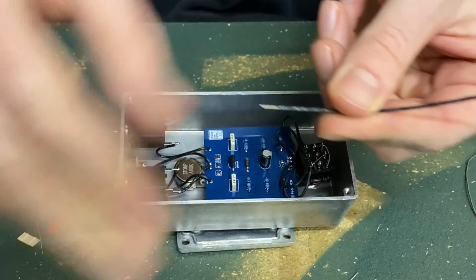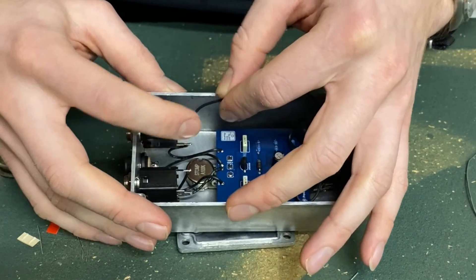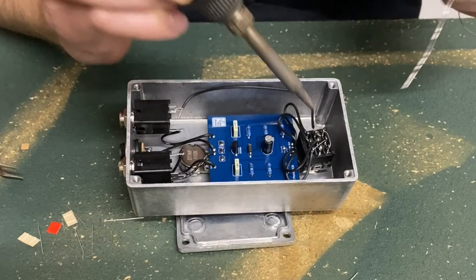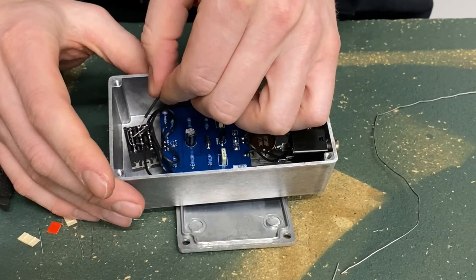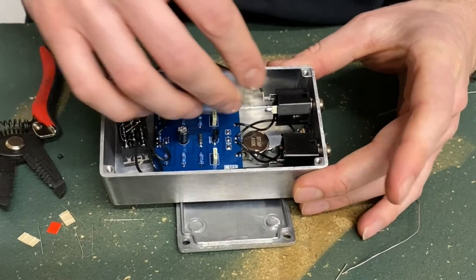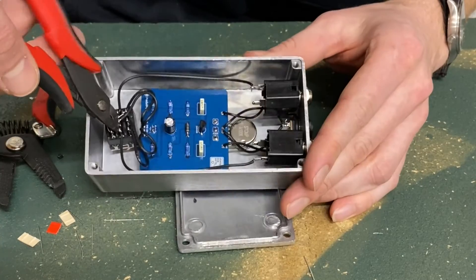Now, take one of the longer pre-cut wires and run it from the right middle lug of the footswitch to the straight edge of the jack on the same side. Solder it in on both ends. Do the same with the last long wire. Run it from the left footswitch lug to the jack. Solder it in on both ends. You are done soldering.